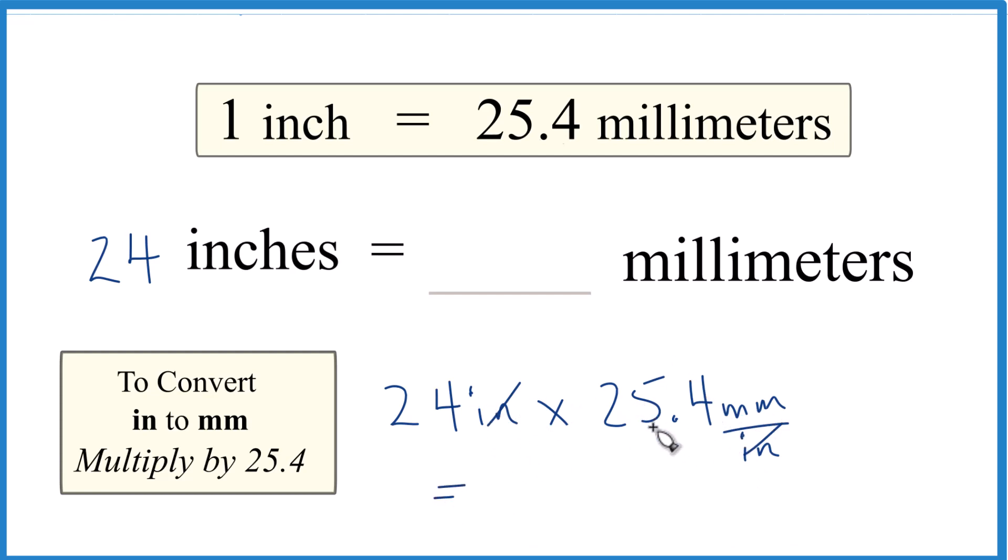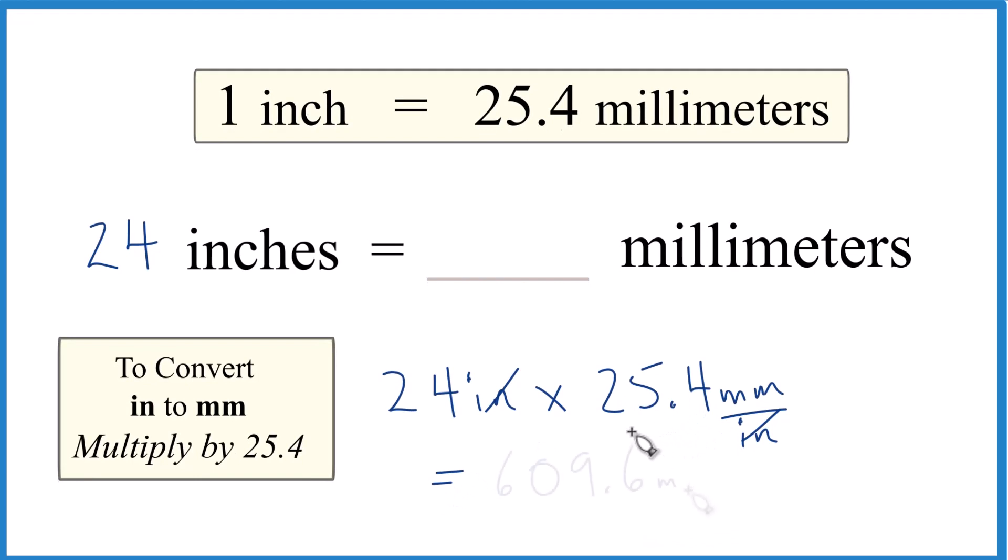24 times 25.4 gives us 609.6 millimeters. So in answer to our question, 24 inches equals 609.6 millimeters.